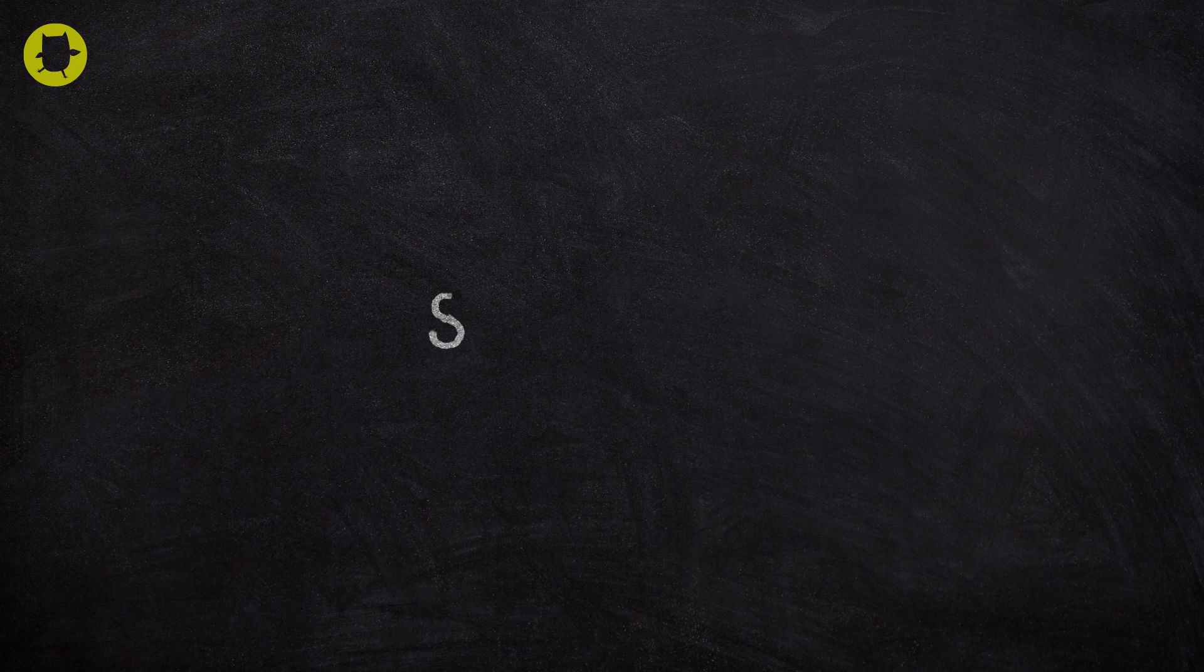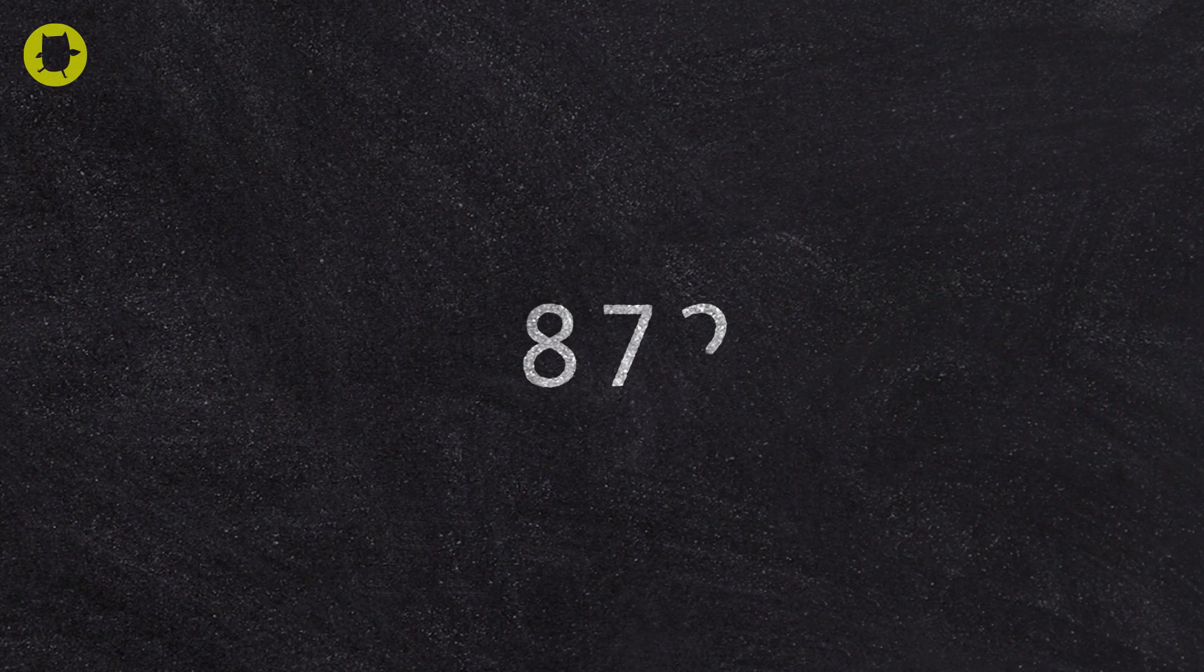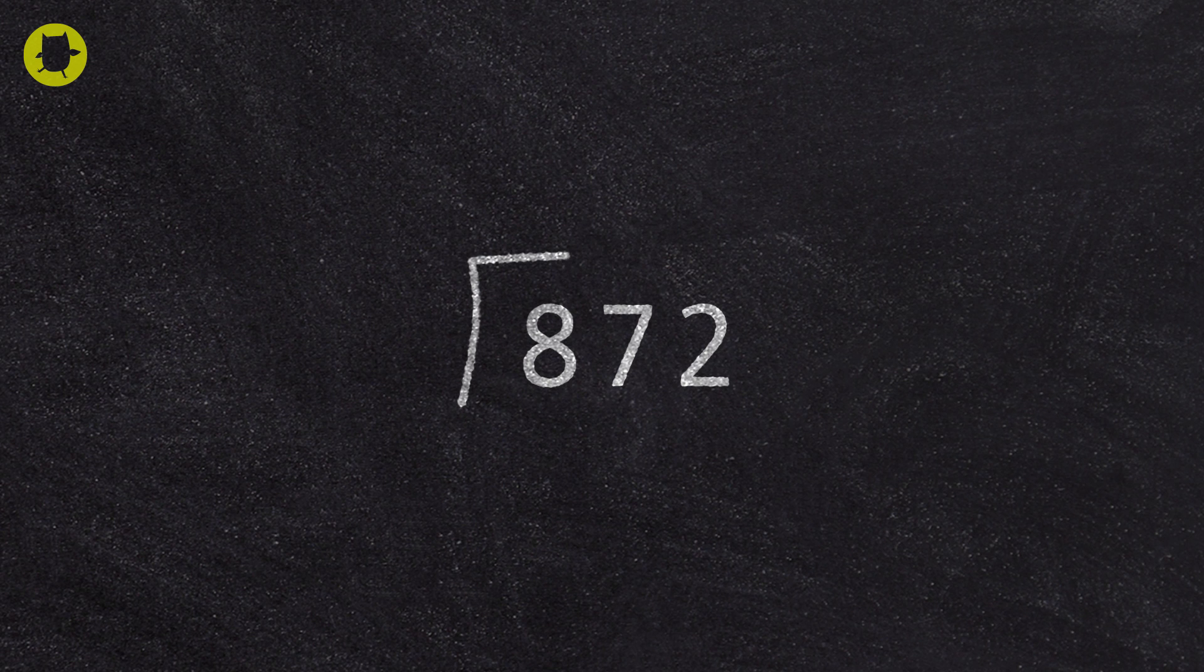Let's take 872 divided by 4. In this example, the dividend is 872 because it is the number divided by the divisor, which is 4. To use long division to work out the calculation, we have to set the calculation out like this.